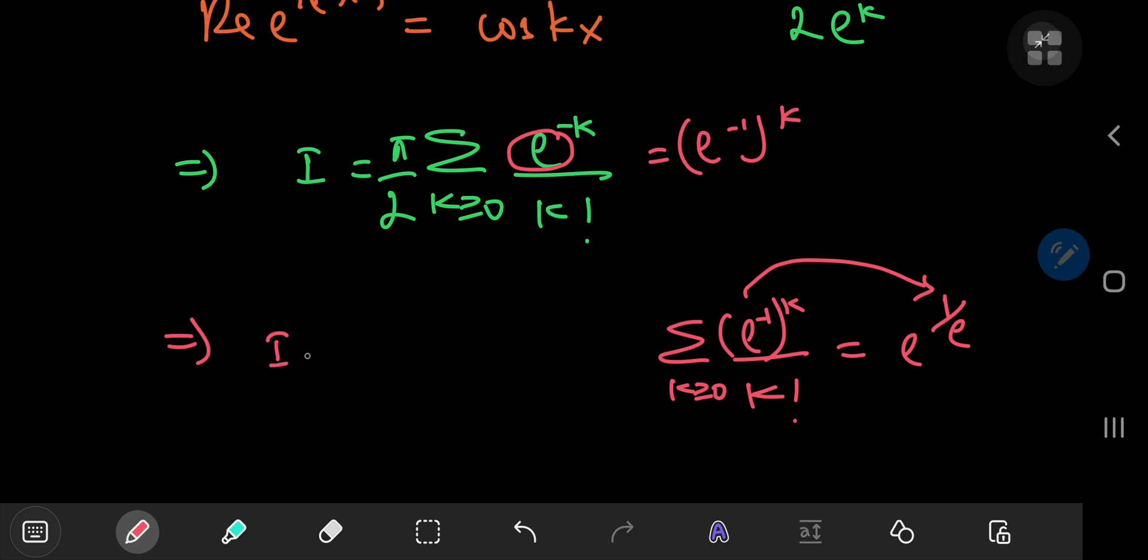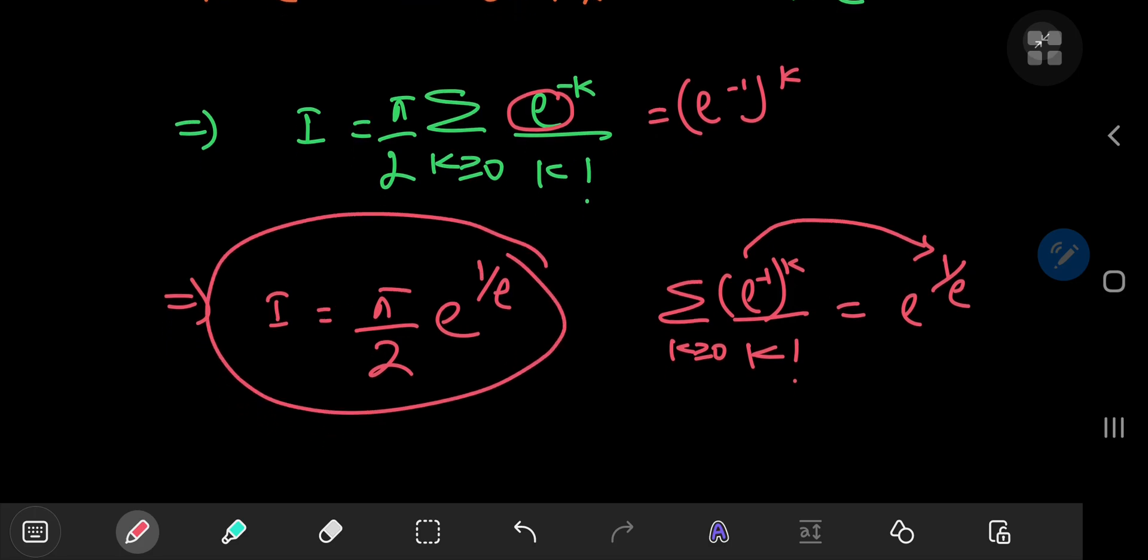Which implies that I equals pi by 2 times e to the 1 by e, which is quite a nice result, if I say so myself.